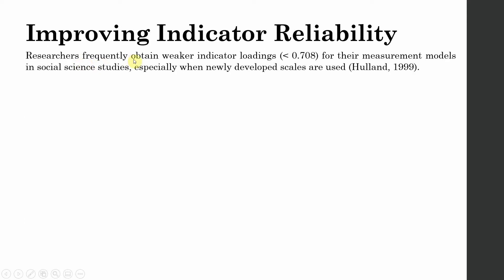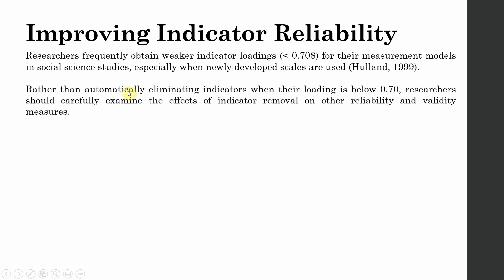Researchers frequently obtain weaker indicator reliability — that is, less than 0.708 — for their measurement models in social sciences studies, especially when newly developed scales are used. Rather than automatically eliminating indicators when their loading is less than 0.708, researchers should carefully examine the effects of indicator removal on reliability and validity.